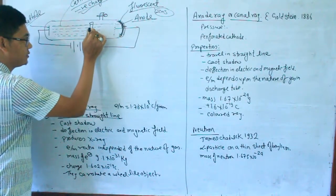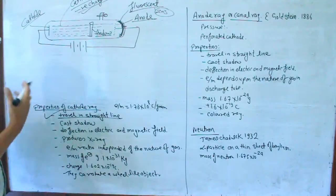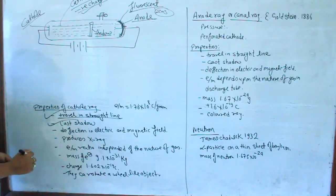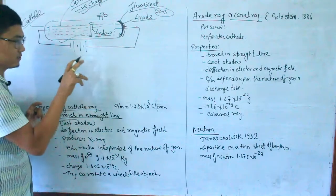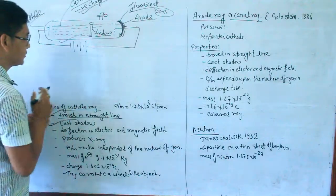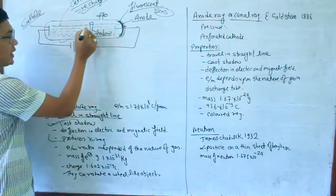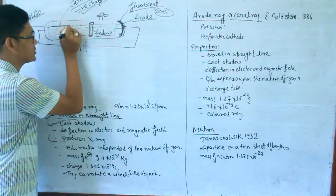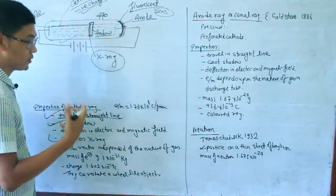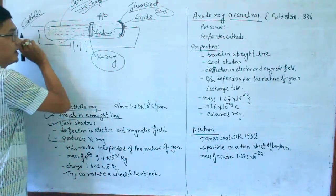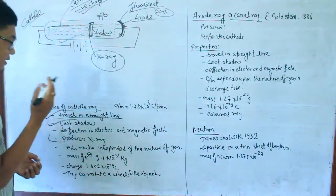If we keep an object in the middle, it casts a shadow, confirming the cathode ray travels in a straight line. In an electric field or magnetic field, the cathode ray deflects — following Fleming's right-hand rule. When the cathode ray strikes a heavy metal object, X-rays are produced.